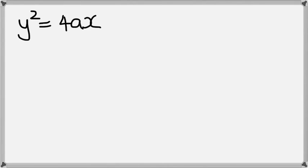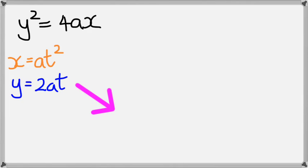We know that our general equation of a parabola is y² = 4ax. Now, with parabola, there's no cosine. And so for x, we're just going to have it as at², and y is going to be 2at.